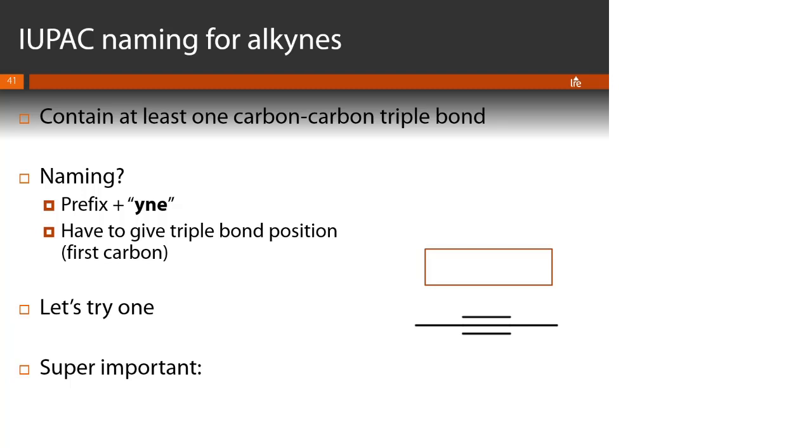Okay, so let's go ahead and number our carbons. So here's carbon one, then here's carbon two, three, and four. So we have four carbons, so that means our prefix is but, add the y-n-e ending, and our triple bond starts at position two. So the IUPAC name for this molecule is 2-butyne.